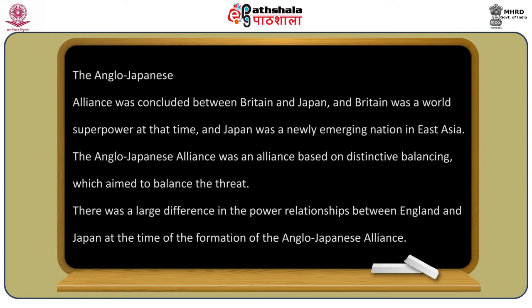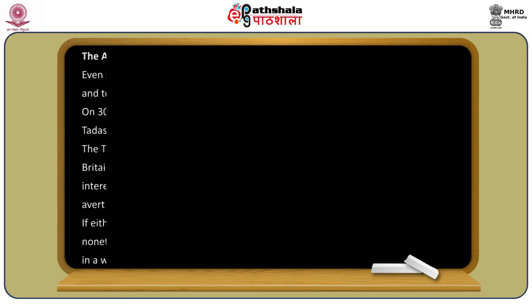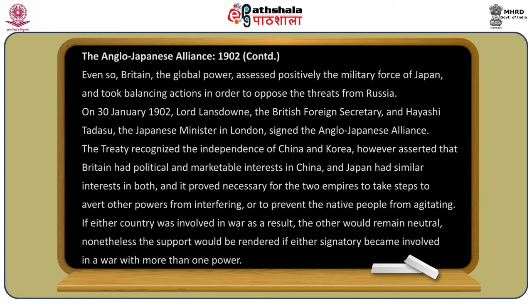The Anglo-Japanese alliance was based on distinctive balancing, aimed to balance the threat despite the large difference in power relationships between England and Japan at the time of its formation. Even so, Britain assessed positively the military force of Japan and took balancing action to oppose threats from Russia. On 30 January 1902, Lord Lansdowne, British Foreign Secretary, and Hayashi Tadasu, the Japanese minister in London, signed the Anglo-Japanese alliance.